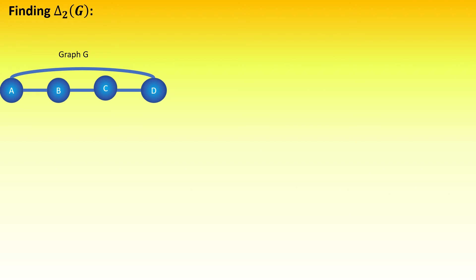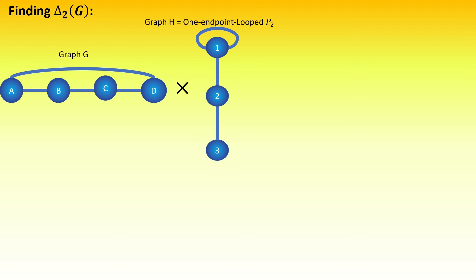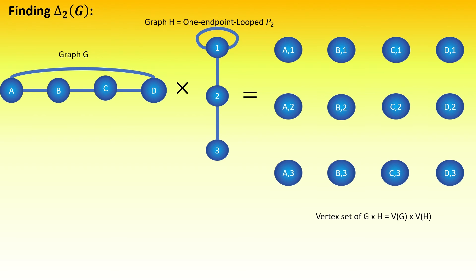Say this is our input graph g, and we want to find delta sub 2 of g. That means we will be taking the tensor product of g and a path graph h of length 2 with a self-loop at one end, and then collapsing the vertices with right entry not equal to the looped end into a super vertex w. Recall that the vertex set of the tensor product is the Cartesian product of the vertex sets of its factor graphs, and two vertices in the tensor product are adjacent when their left and right entries are adjacent in their respective graphs.